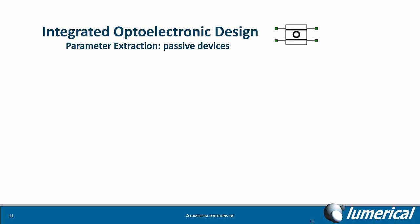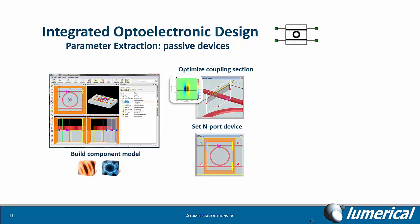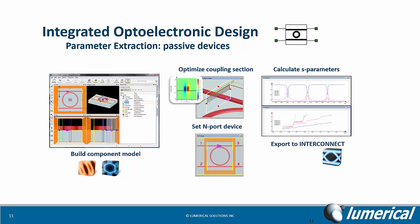For passive components, you can build your component model by creating or importing the device geometry using mode solutions or FDTD solutions. You can optimize critical parts of the device, such as a coupling section of the ring modulator, or you can calculate the element multiport S parameters and export the results into InterConnect.